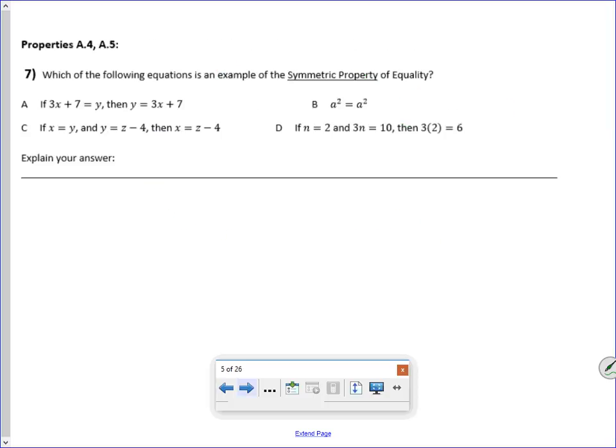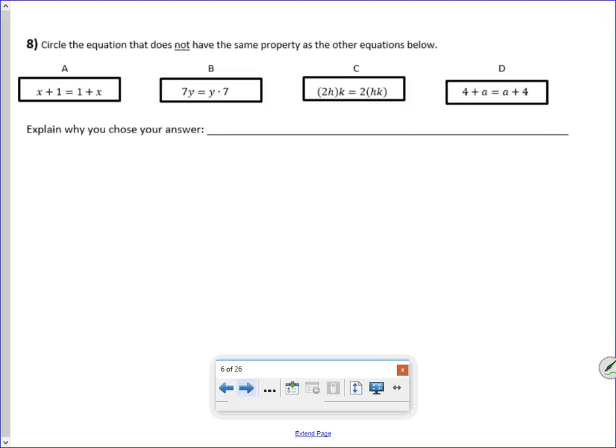All right, number 7. Which one of the following is an example of a symmetric property? And so the symmetric property is this one. Symmetric property is just if A equals B, then B equals A.